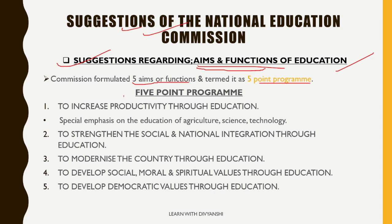The first point of the Five-Point Program is to increase productivity through education. The education given to children should be production-oriented so that the whole nation develops. Special emphasis was placed on education in agriculture, science, and technology. Agriculture should be part of children's education, science should be compulsory at primary and secondary level, and technology should be included at higher education level. Universities should also conduct research work.